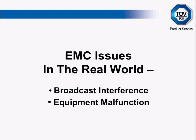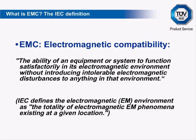So what is EMC? The International Electrotechnical Commission defines EMC as the ability of an equipment or system to function satisfactorily in its electromagnetic environment without introducing intolerable electromagnetic disturbances to anything in that environment. The IEC also defines the electromagnetic environment as the totality of electromagnetic phenomena existing at a given location.